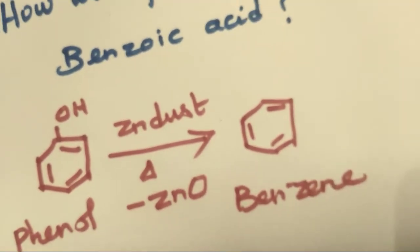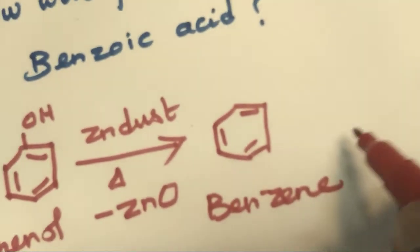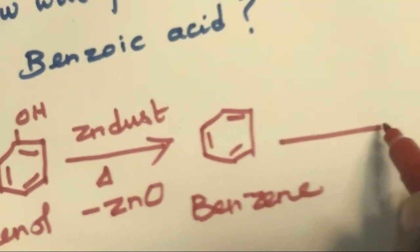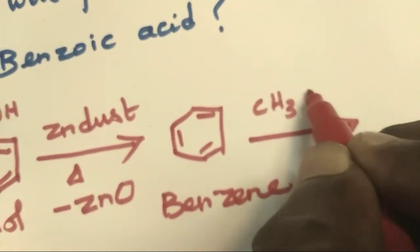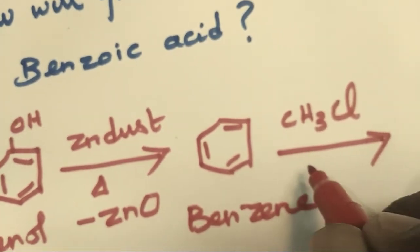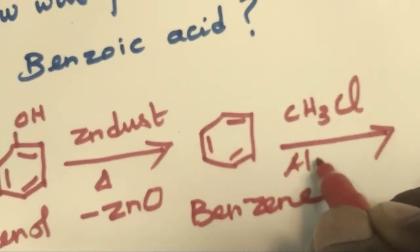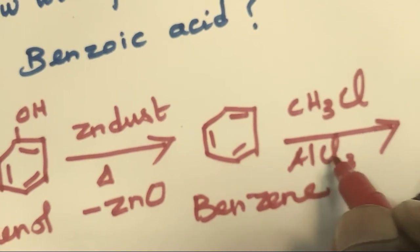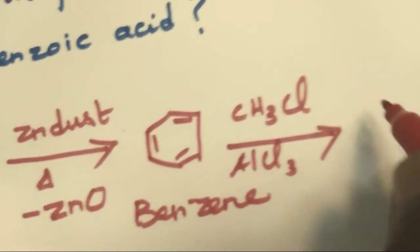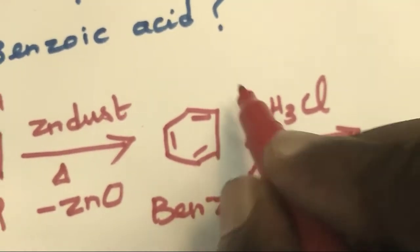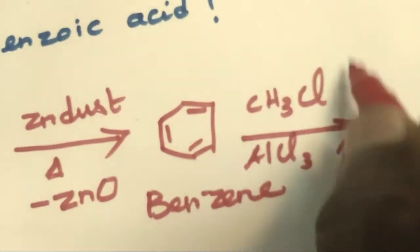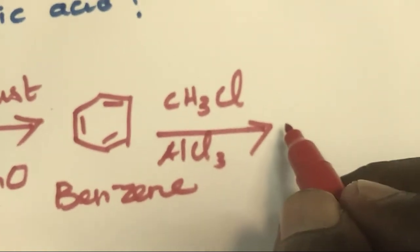When benzene reacts with methyl chloride in the presence of aluminum chloride (AlCl3 or aluminum trichloride), there is removal of hydrogen chloride to form toluene.